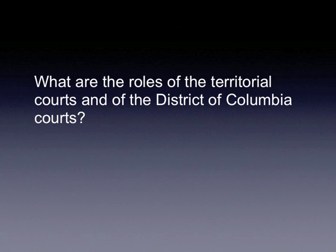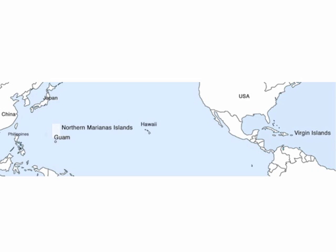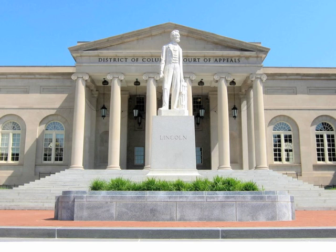What are the roles of the territorial courts and of the District of Columbia courts? Under its power to govern the territories of the United States, Congress created courts for the nation's territories. These courts are in places such as Guam and the Virgin Islands and function much like the local courts in the 50 states. As directed in the Constitution, Congress established a system of courts for the seat of government of the United States. The District of Columbia courts handle all local judicial matters for the District, including trials and appeals.